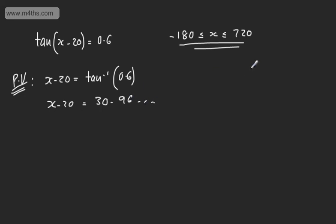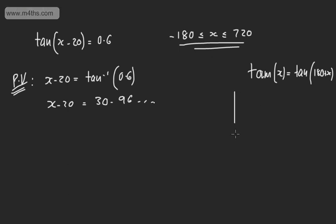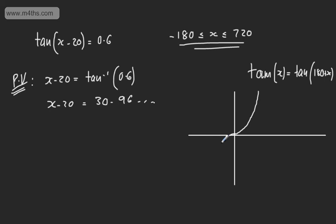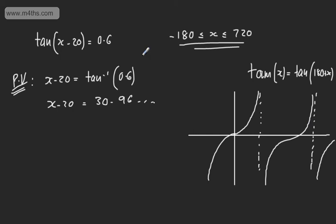Now let's consider the periodic nature of the tan curve. We know tan x equals tan of 180 plus x. The tan curve cycles every 180 degrees, with asymptotes at 90 degrees, 270 degrees, minus 90 degrees, and every odd multiple of 90. So we find the principal value and then add or subtract multiples of 180 for subsequent solutions.